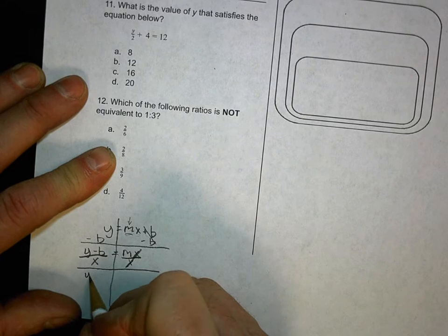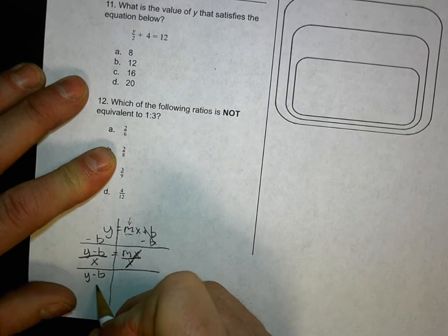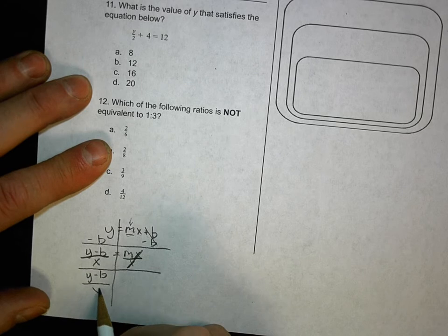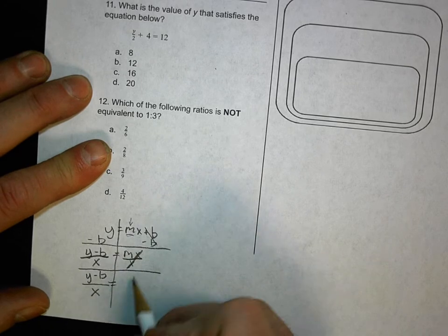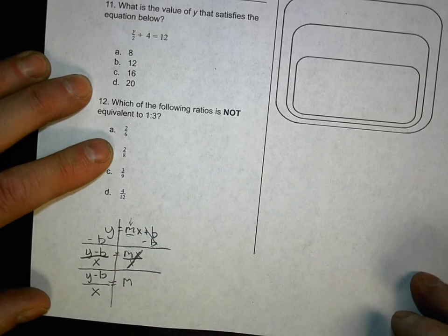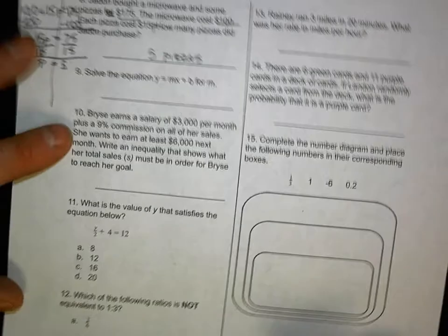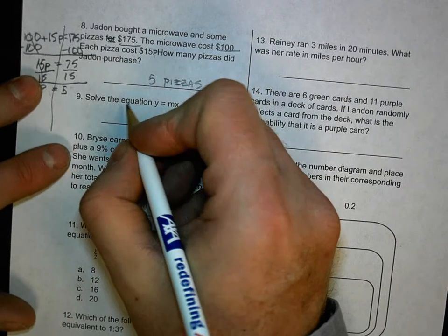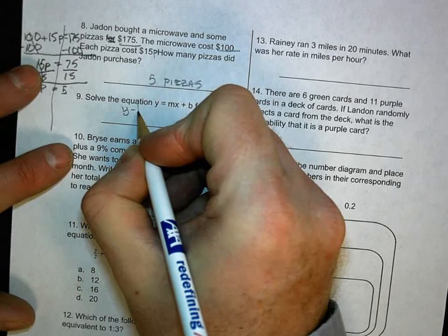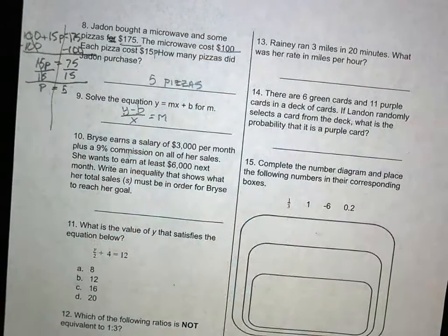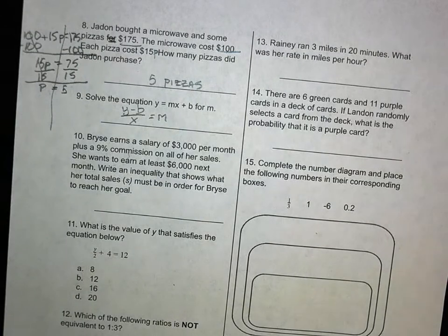You can't see, can you? Y minus b over x equals m. So that becomes my answer. Y minus b over x equals m. I'll go ahead and write it up here. Y minus b over x equals m. Don't let them out trick you. Remember, you don't have to solve it. They're all variables.